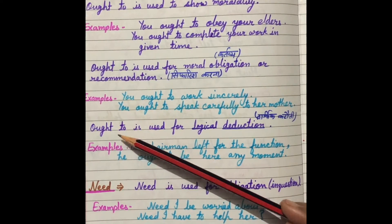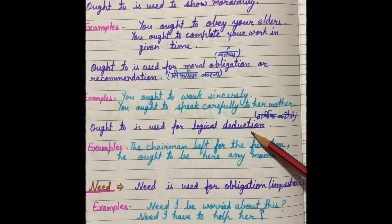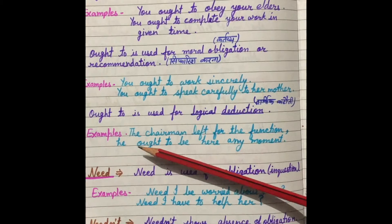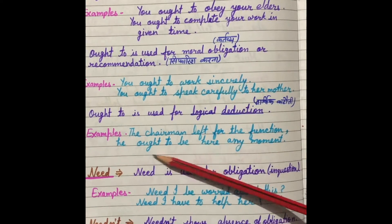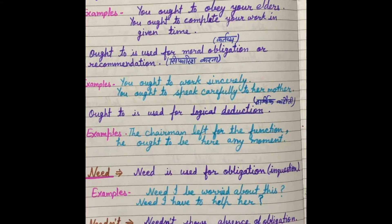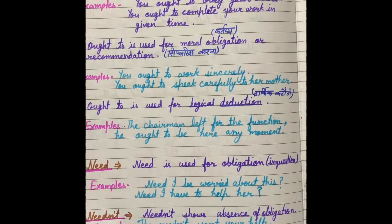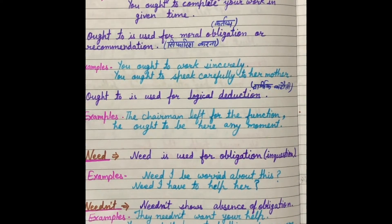Next, ought to is used for logical deduction — तार्किक कटौती. जहाँ पर एक से ज़्यादा तर्क या facts दिये जाते हैं, for that we use ought to. For example: 'The chairman left for the function' — chairman function के लिए निकल चुके हैं — 'he ought to be here any moment' — वो किसी भी moment पर यहाँ पहुँच सकते हैं.